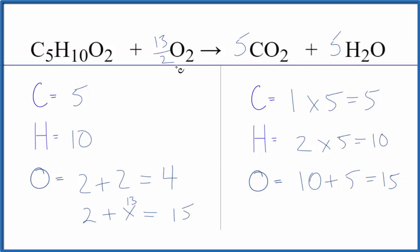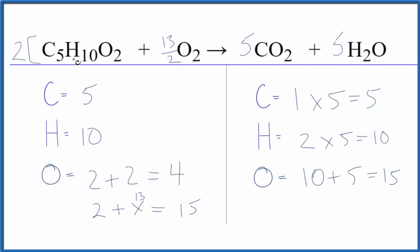So we need to get this to be a whole number. The way we do that, we multiply everything by two. So we're just going to double everything and that'll get rid of our fraction. So we end up with two, and then two times thirteen over two, the twos cross out, that's just thirteen. Two times five is ten, two times five is ten.